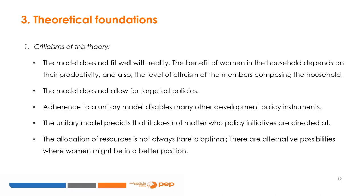There are several criticisms of this unitary model. The model does not correspond well with reality. The benefit of women in the household depends on their productivity and also on the level of altruism of household members. The model does not allow for targeted policies, and adherence to a unitary model disables many other development policy instruments. The unitary model predicts that it does not matter who policy initiatives are directed at. The allocation of resources is not always Pareto optimal — there are alternative possibilities where women might be in a better position.